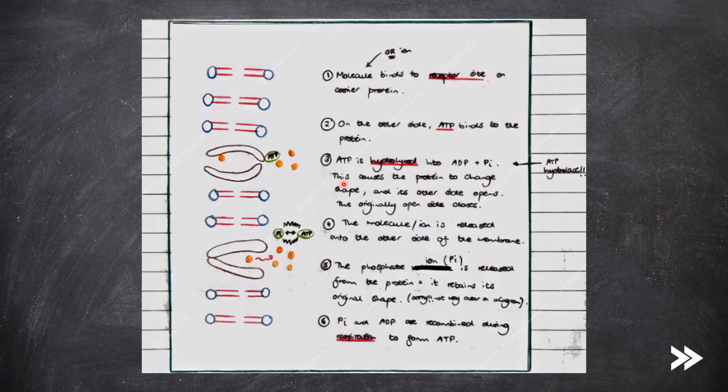The energy released causes the protein to change shape and its other side opens. The originally open side closes, whereby the molecule or ion is released onto the other side of the membrane. Finally, the phosphate ion is released from the protein, meaning that the protein retains its original shape. The phosphate ion and ADP are then recombined during respiration or photosynthesis to form ATP.